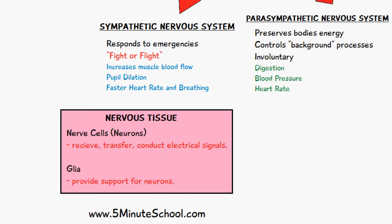Lastly, just to end the video, there are some final definitions. The nervous system basically consists of nervous tissue. We have nerve cells or neurons and glia. Nerve cells are what receive, transfer, and conduct electrical signals, and glia provides support for the neurons.